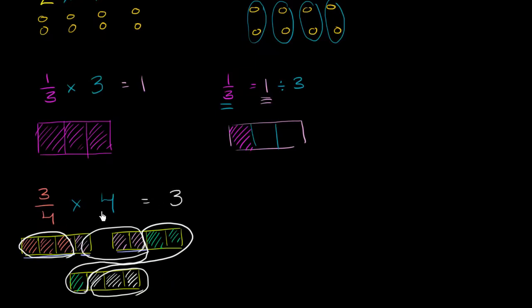Well, if 3 fourths times 4 is equal to 3, that means that 3 divided by 4 is equal to 3 fourths.